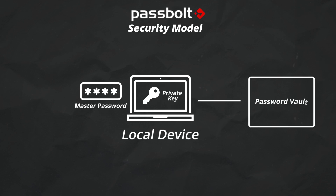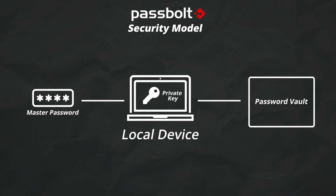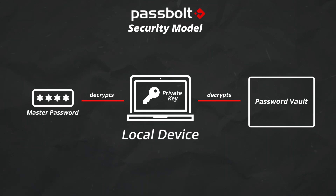The private key is used as the primary form of authentication to unlock your password vault. In order to get access to your private key, you need to enter the master password, which acts as a passphrase. So it decrypts your private key, which then decrypts your password vault. The private key is never sent to the Passbolt cloud. This authentication method prevents intruders because they have to have access to both your master password — something you know — and your private key stored on a local device — something you have.